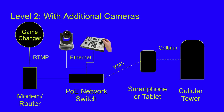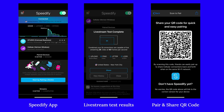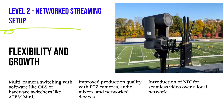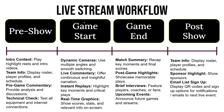In Level Two we've started to add more cameras, maybe a joystick, and apps like Speedify — which combines cellular and Wi-Fi connectivity for a stronger stream from the field. We're now looking at OBS, vMix, ATEM video switchers, and PTZ cameras. At this level you're thinking about how to put together a really good live stream.